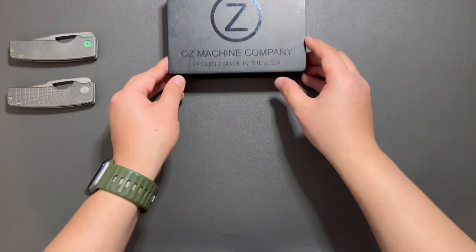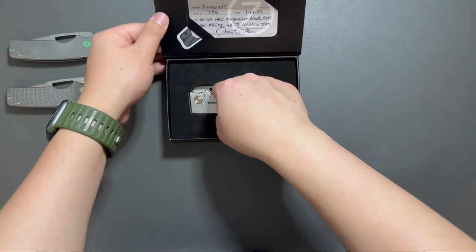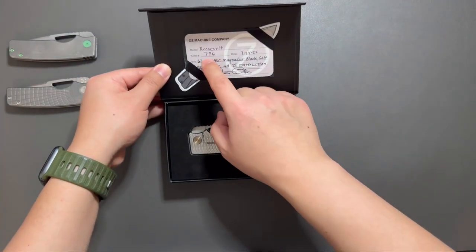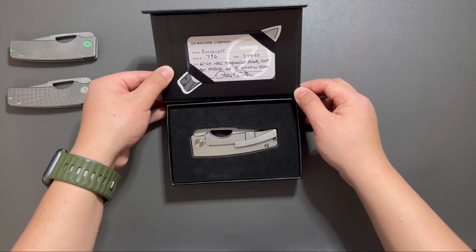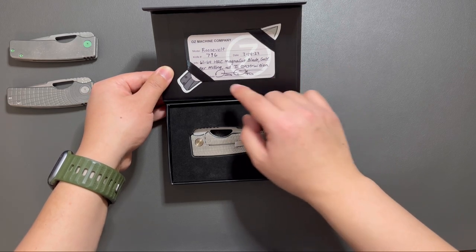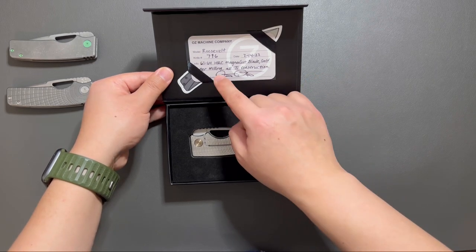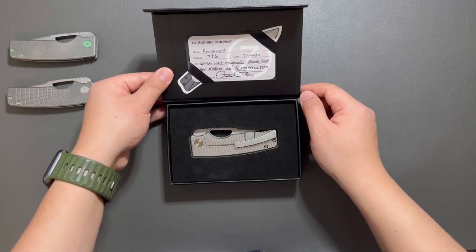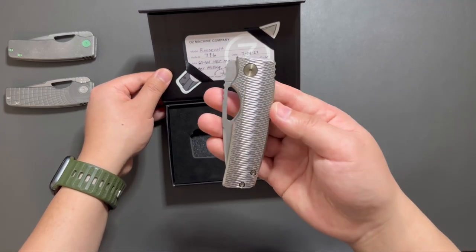The third one, this one is my grail knife. This one is 796, and also 63 to 64 HRC magnet cut, using golf powder milling, old tie construction, also known as the Silver Surfer.